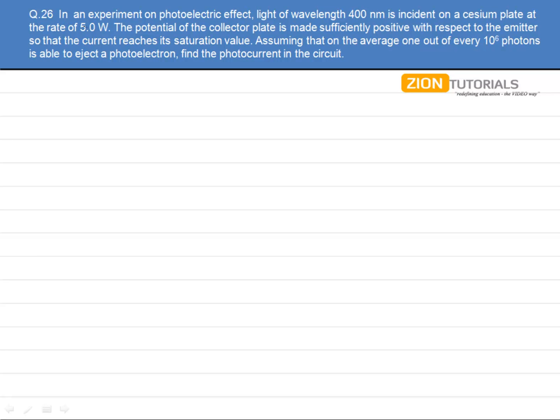As the question says, in an experiment on photoelectric effect, light of wavelength 400 nm is incident on a cesium plate at a rate of 5 Watt.